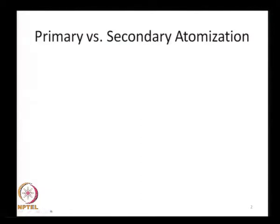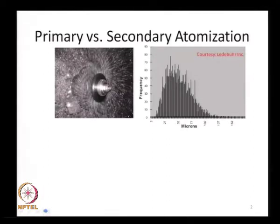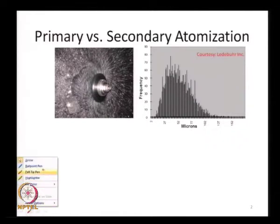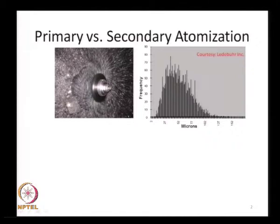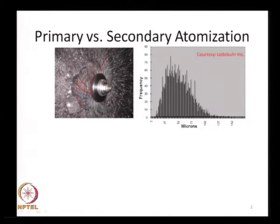Let us look at why we want to study primary atomization, starting with a rotary atomizer. A rotary atomizer has a spinning disk, and you can see a nice periodic structure of liquid spewing out. This periodic structure is spaced azimuthally because of the serrations on the disk. The primary break-up process is essentially a result of a liquid jet spilling through those serrated edges and breaking up due to capillary instability or cross-flow instability.